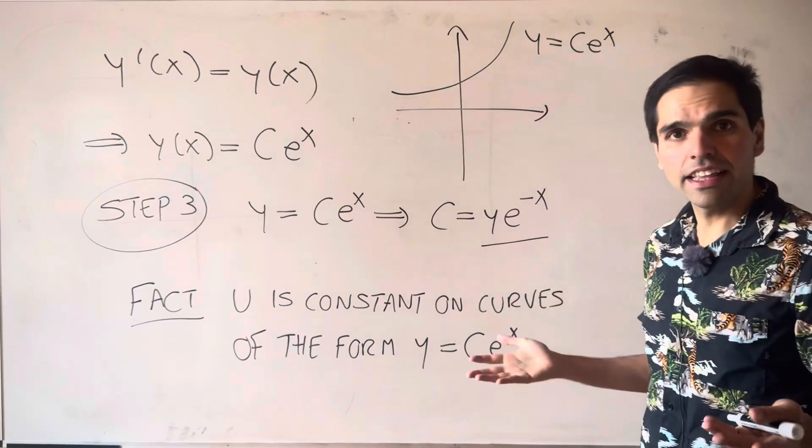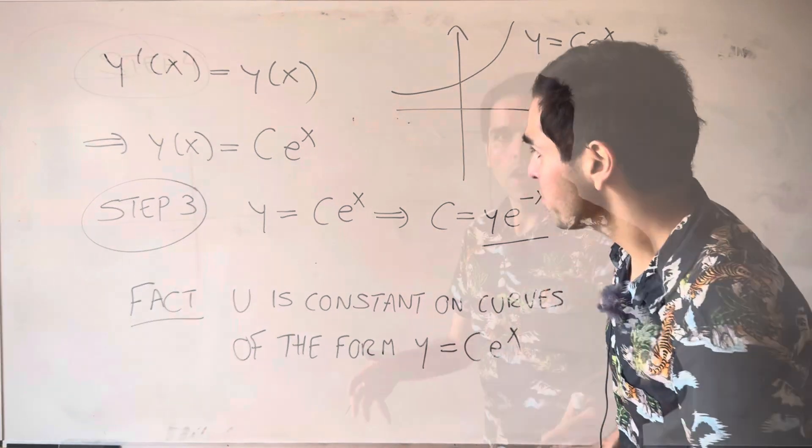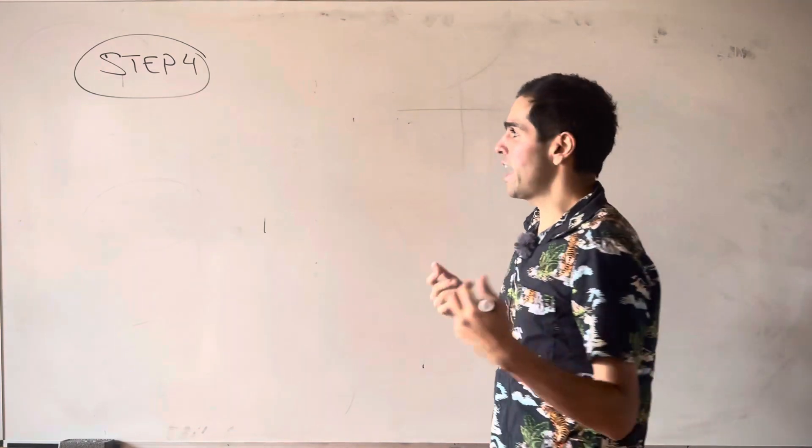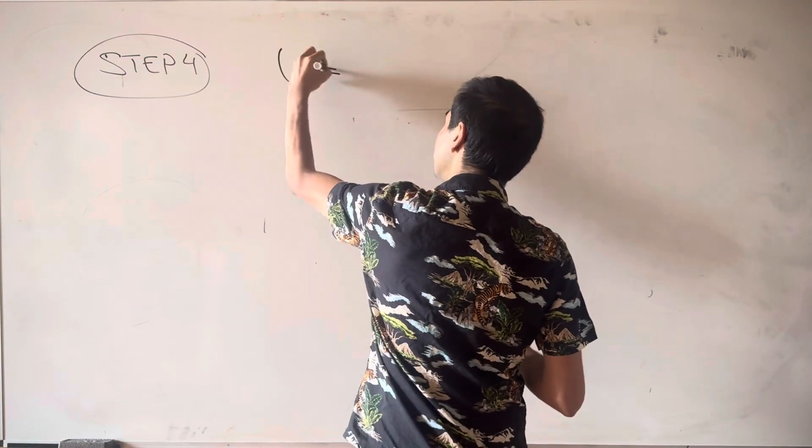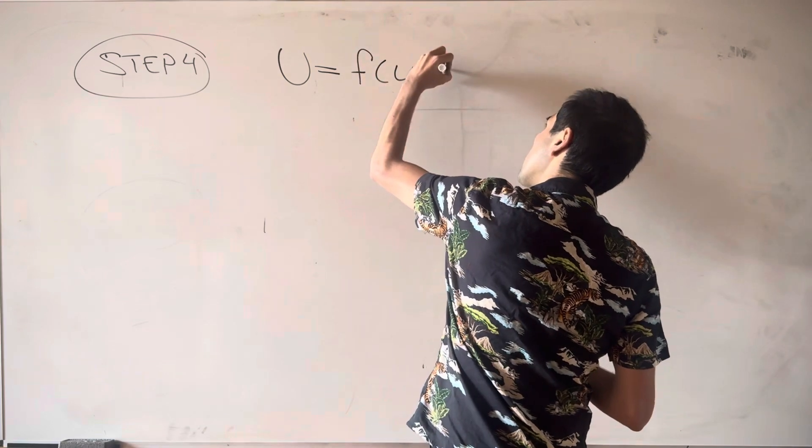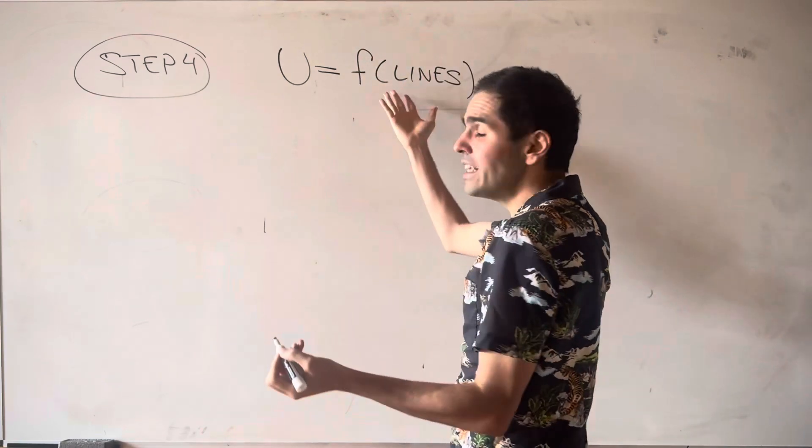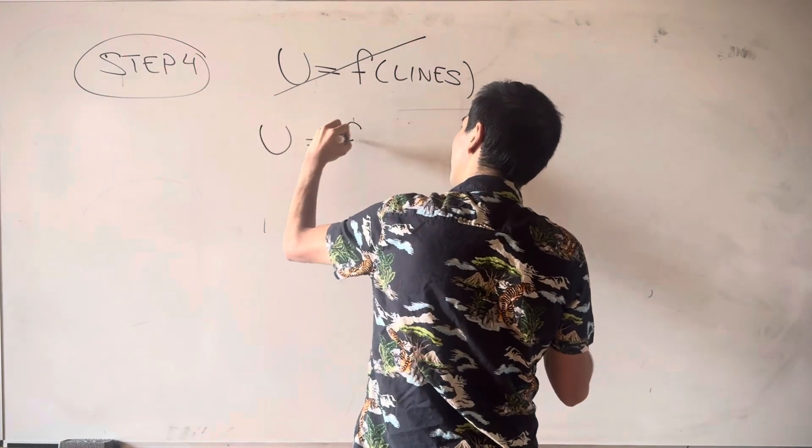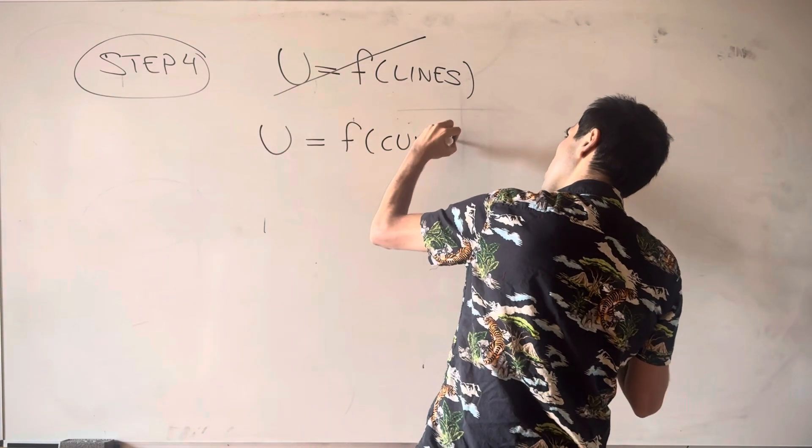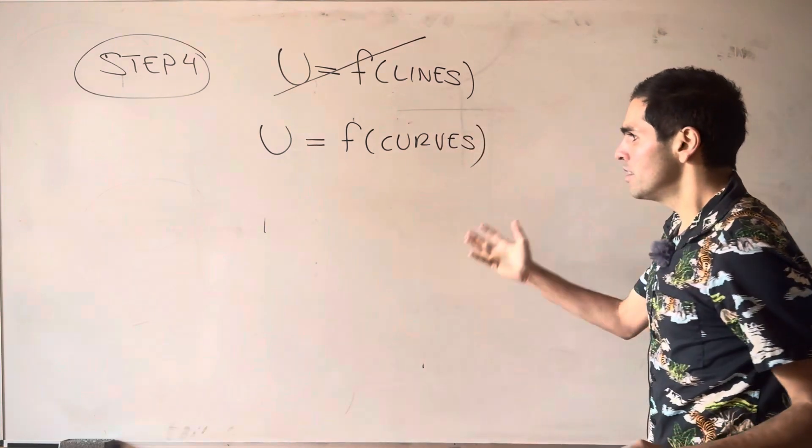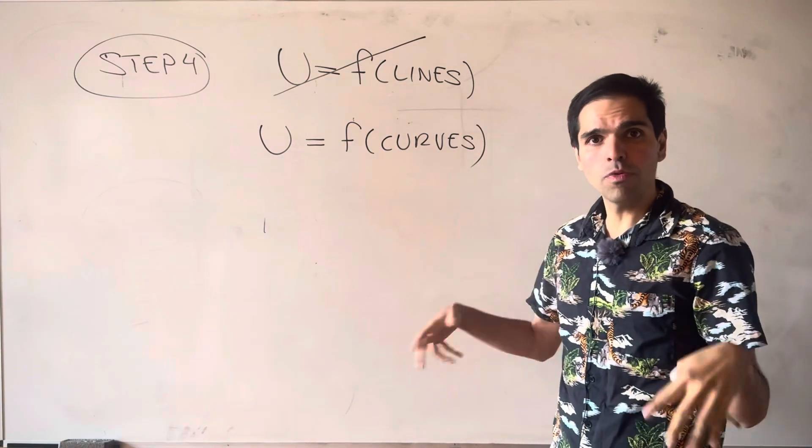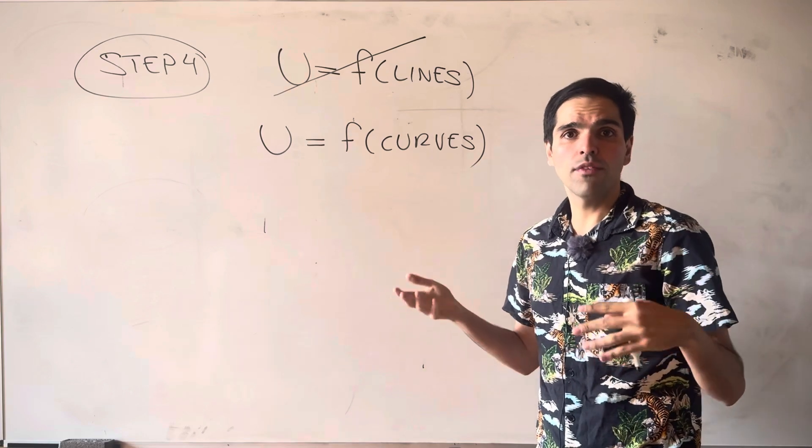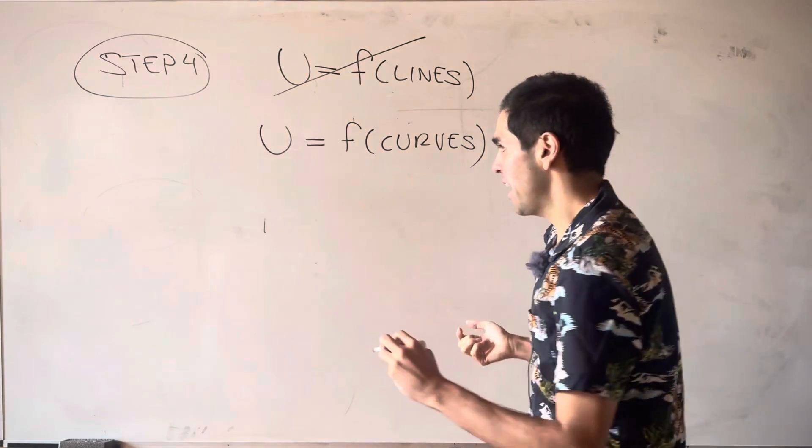And then in the end, what is our solution? Well, what we had before is that u was any function of the lines. But in this case, the lines are curves. So u is any function of the curves. But once again, what variable did we use to describe those curves? It was y e to the minus x.